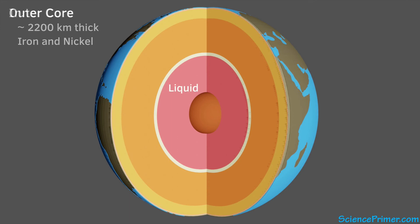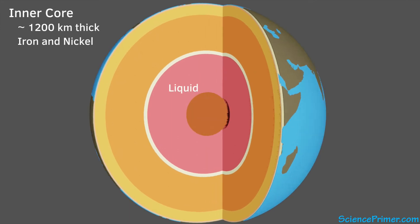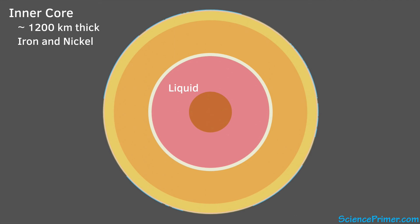The final layer is the inner core, which extends the final 1,200 kilometers all the way to the center of the Earth. The inner core has the same composition as the outer core, but is solid because the pressures at these depths are great enough to prevent the iron from melting.